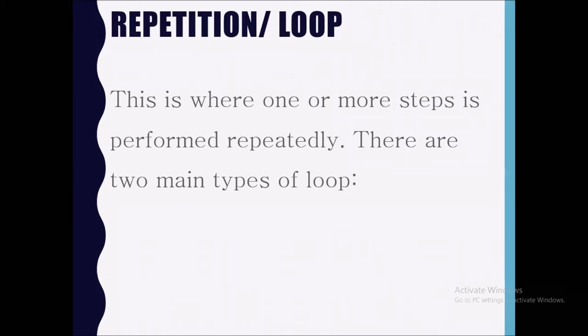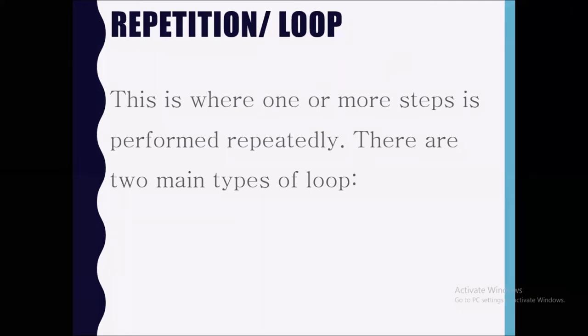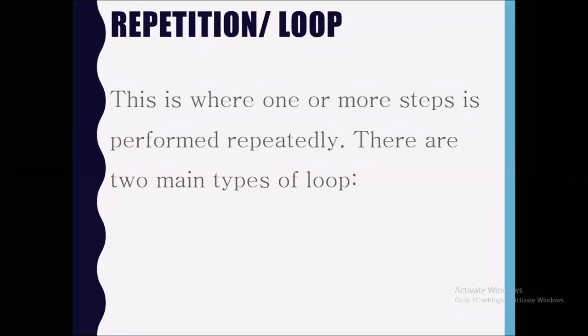In one of our previous videos, I said that if we're going to find the sum of 100 numbers, it would make no sense — it would be time consuming — for you to declare 100 different variables. The processing aspect of any computer system can take on the task of looping, meaning one particular step is done over and over again. It's like your daily life: while some aspects change, most remain the same, so every single day you'd be part of this loop.